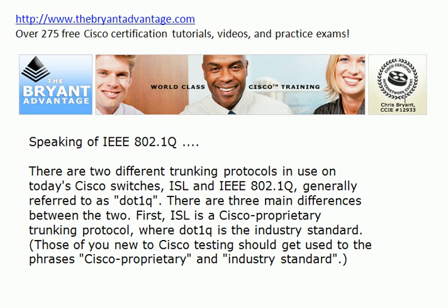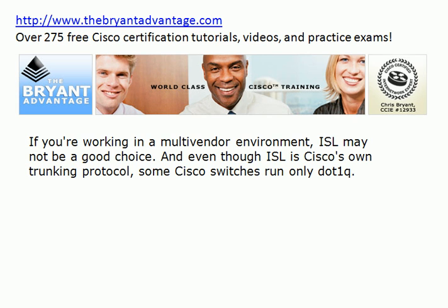There are three main differences between the two, and we better know these differences like the back of our hand. First, ISL is a Cisco proprietary trunking protocol where .1Q is the industry standard. Those of you relatively new to Cisco testing should get used to the phrases 'Cisco proprietary' and 'industry standard.' If you're working in a multi-vendor environment, ISL may not be a good choice. And even though ISL is Cisco's own proprietary trunking protocol, some Cisco switches only run .1Q — you don't even have the option to run ISL.